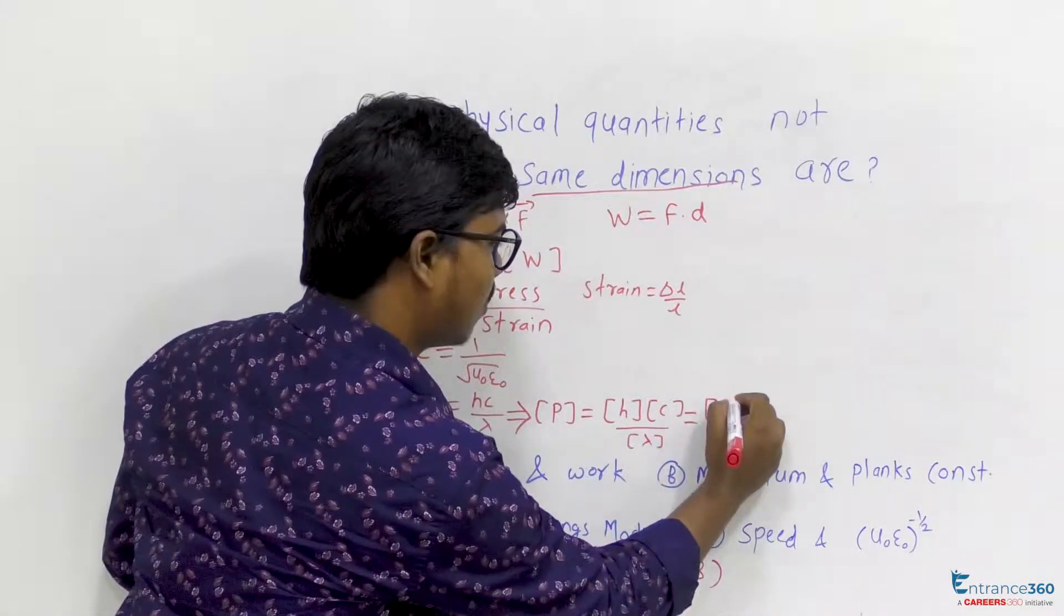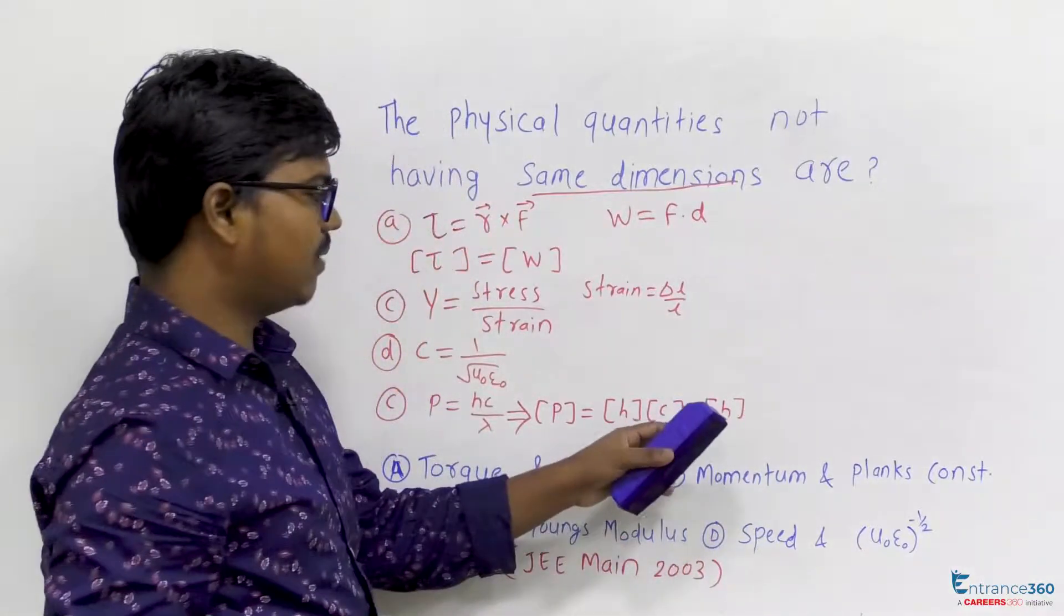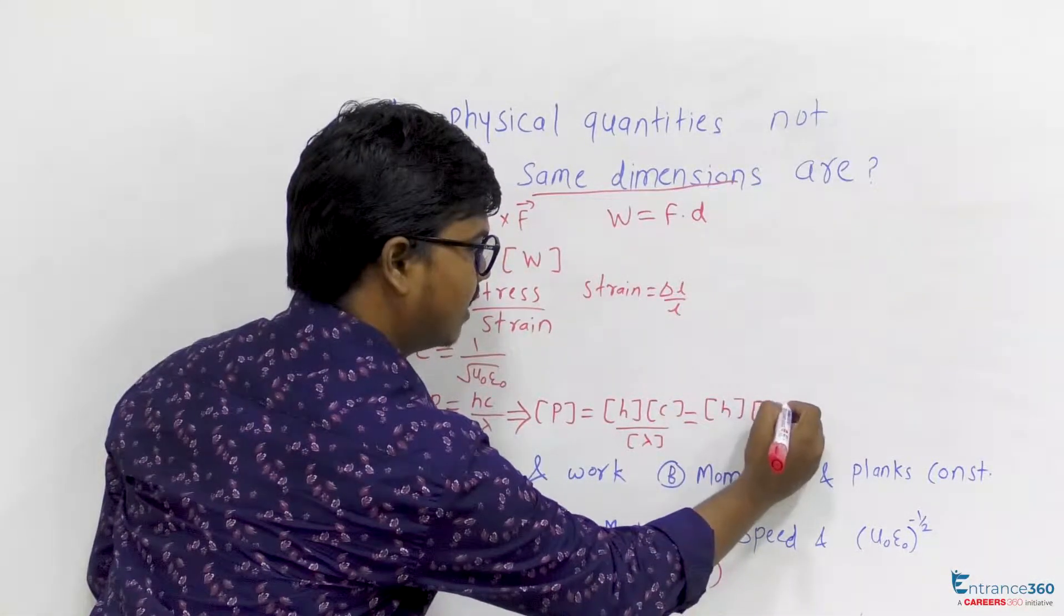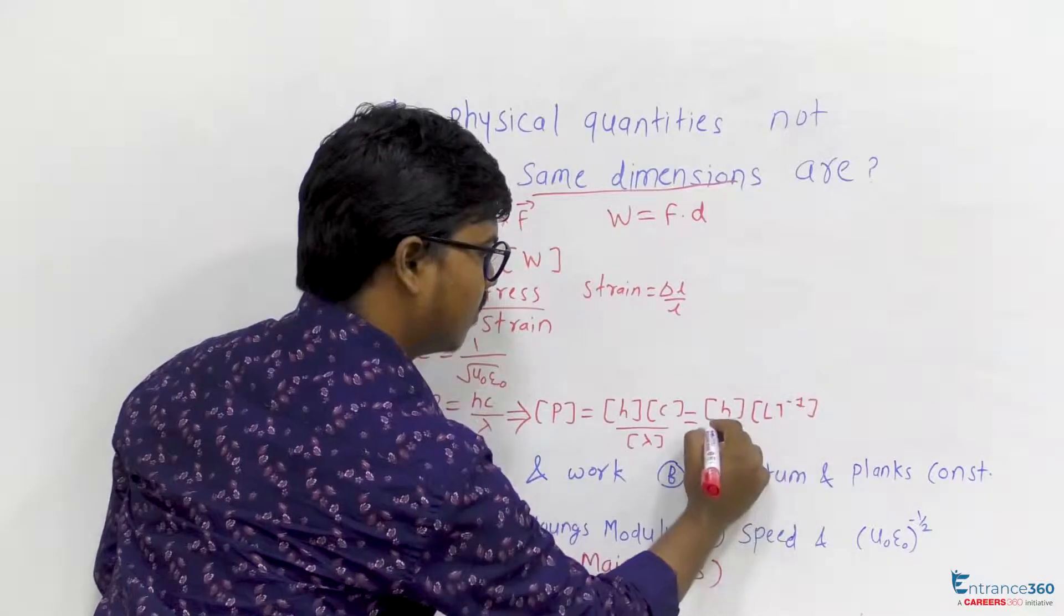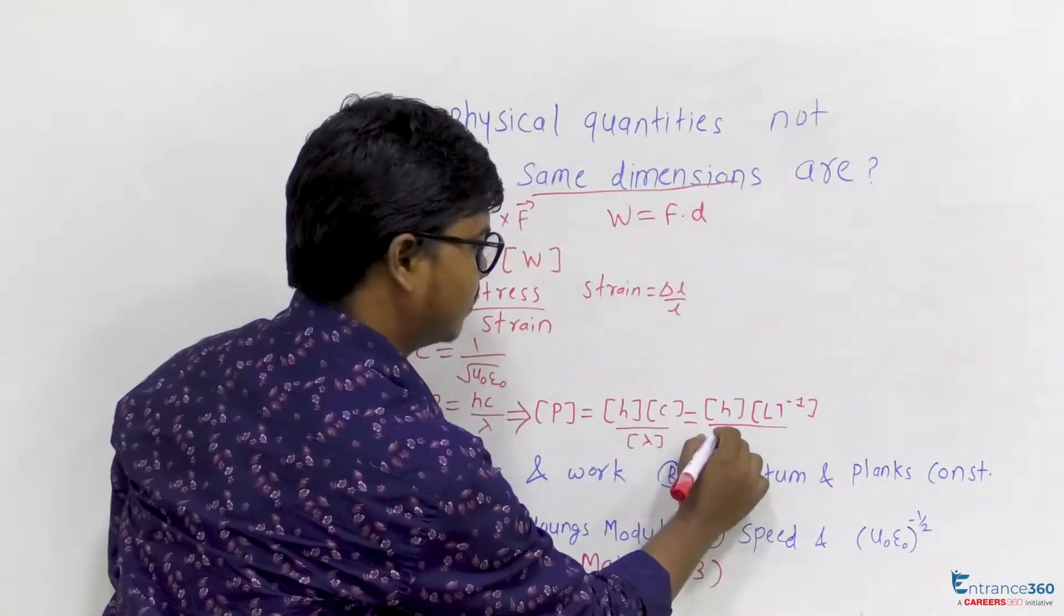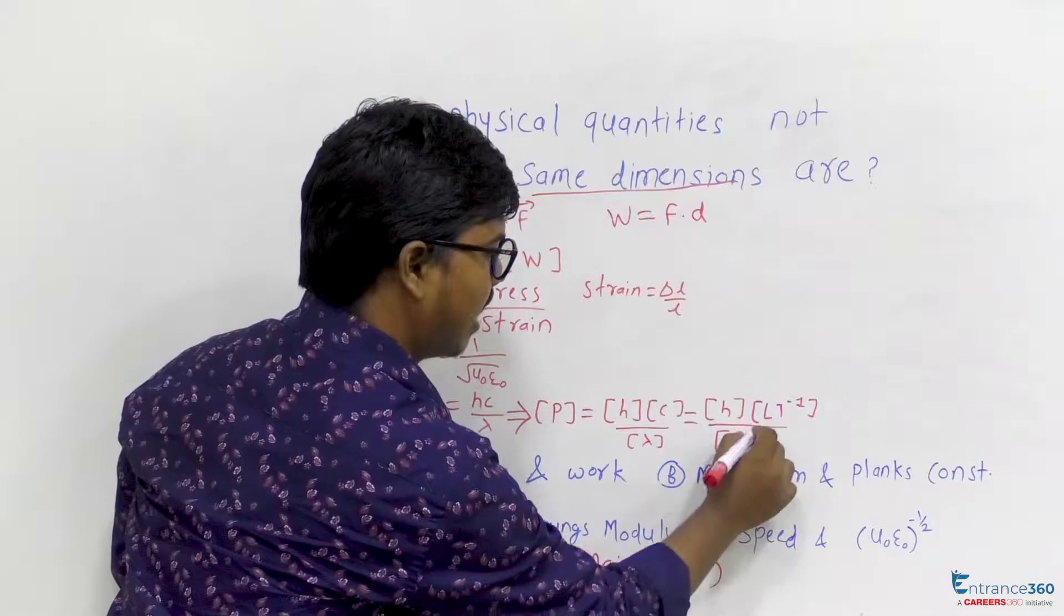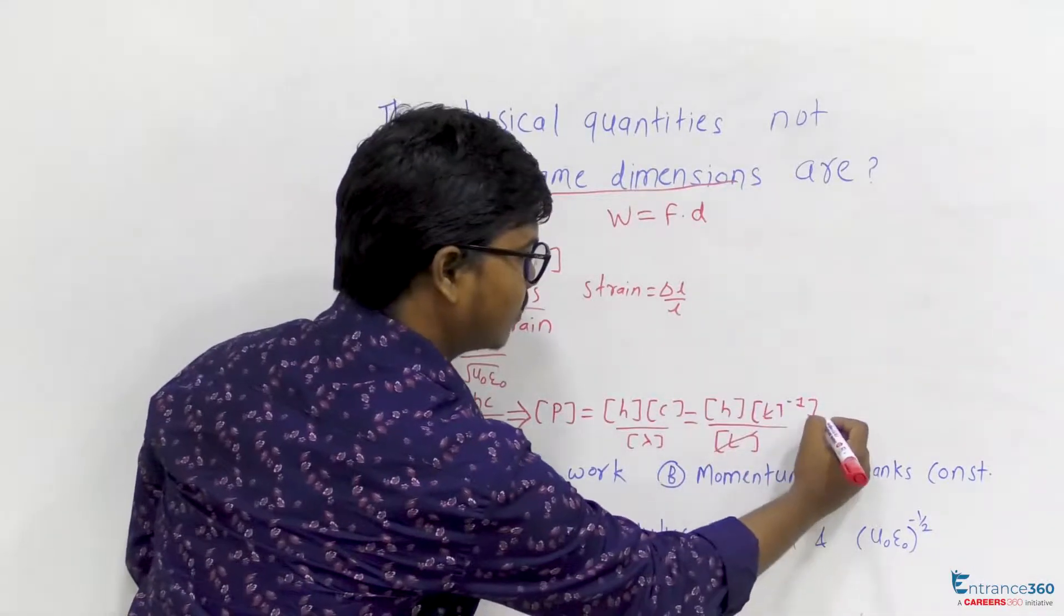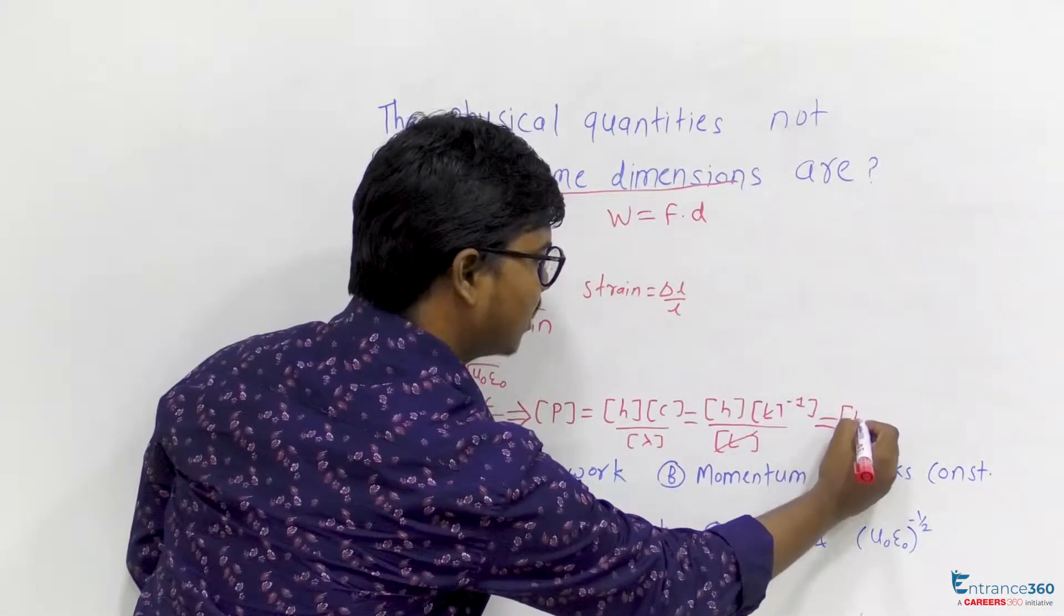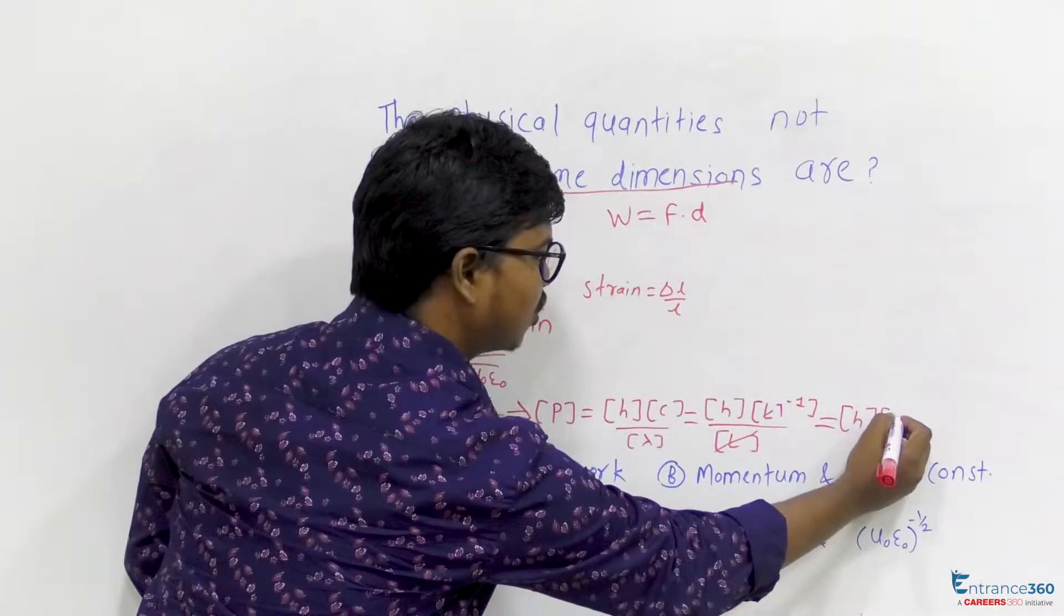What is dimension of C? LT⁻¹. And what is dimension of λ? Simply L. So L and L will be cancelled out, so we are left with dimension of H into dimension of T⁻¹.